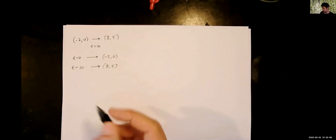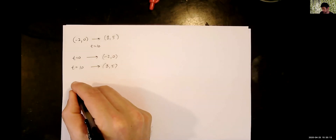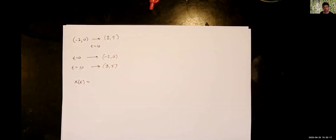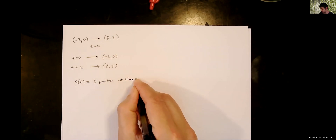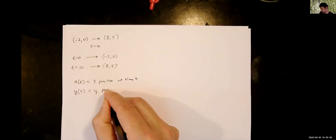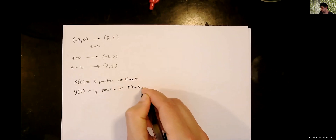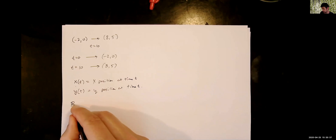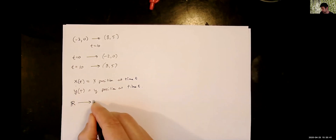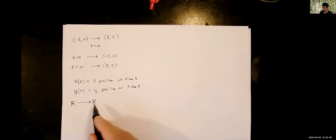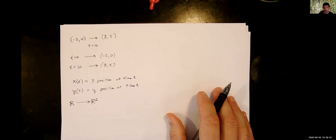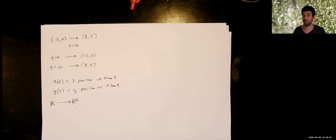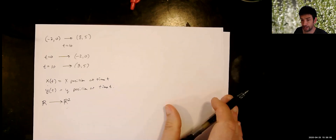This is the neat idea of parametric equations: I'm going to describe this motion using two different functions. I'll have x of t, which gives me the x coordinate at time t, and y of t to give me the y coordinate at time t. We're used to functions where we input a number and get out a number, but now we're inputting a real number — time — and outputting a coordinate pair, sometimes written as ℝ². This is a new kind of function.